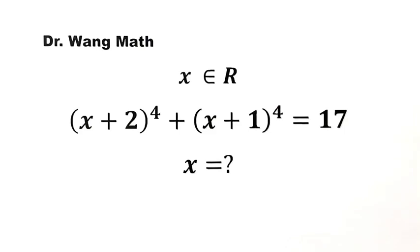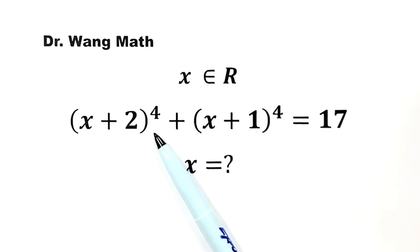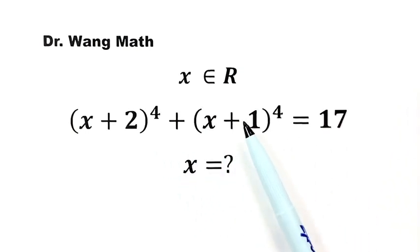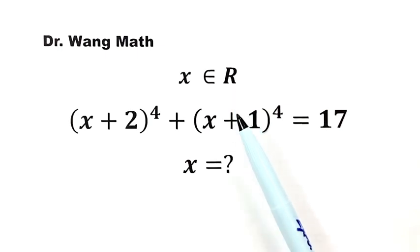In this video, we're going to solve this equation: (x + 2)⁴ + (x + 1)⁴ = 17, where x is a real number.